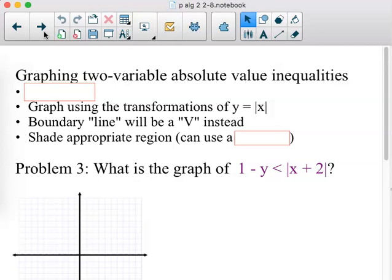So, instead of graphing a line, I'm going to have to graph a V. Then I have to hit my pause button. Should it be dashed? Should it be solid? Well, I'll look for the equals bar, that'll tell me that. And then again, I have to figure out where to shade. Well, I had mentioned to you before, I don't like shortcuts, because testing a point always works, no matter what. So, we're going to graph two-variable absolute value inequalities.